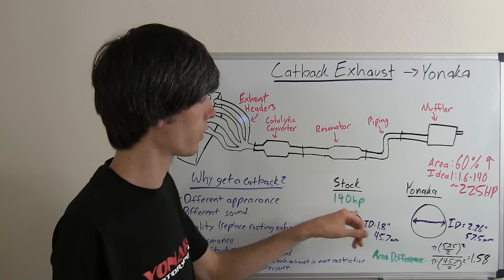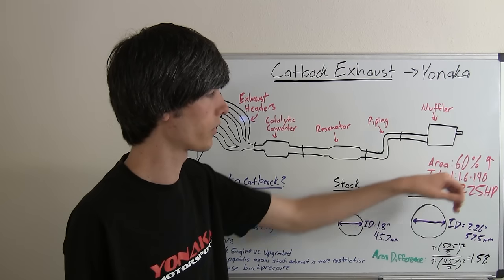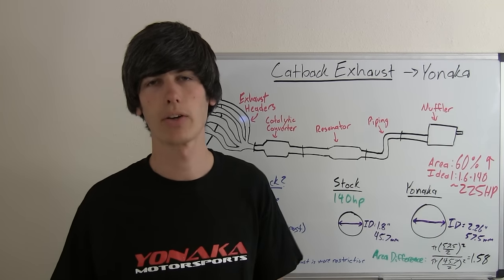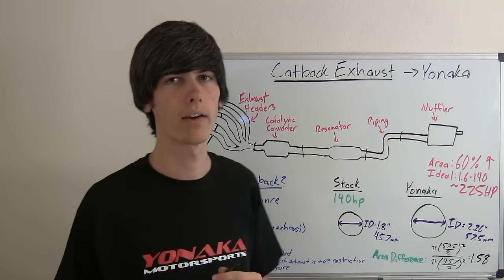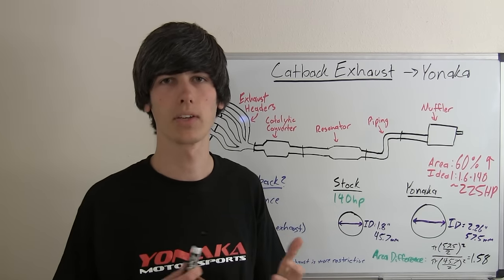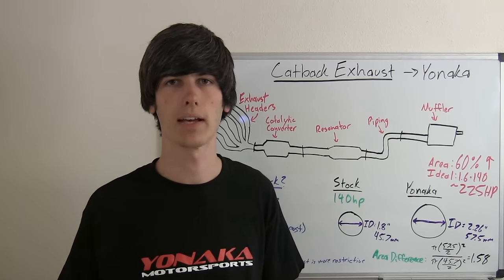So we simply multiply the 140 by 1.6 for the 60% increase, and it gives us about 225. So for an engine producing about 225 horsepower, you could probably see some significant gains from this cat-back exhaust.